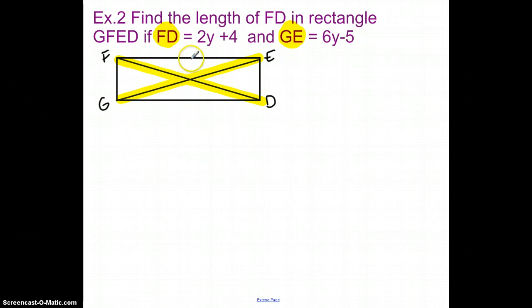But let's read the directions first. It says find the length of FD. So they actually want us to find the length of a side, which means not only am I going to have to find y, but then I'm also going to have to find FD when I'm done. So if I go to set this up, I know that FD and GE are going to be equal to each other.